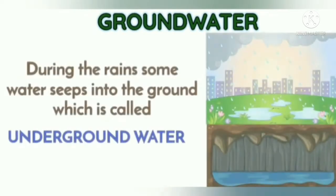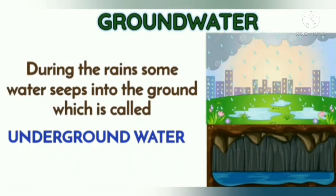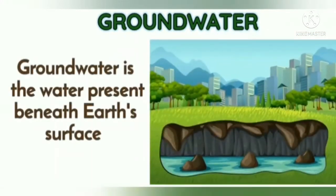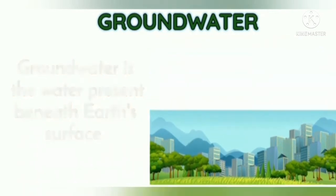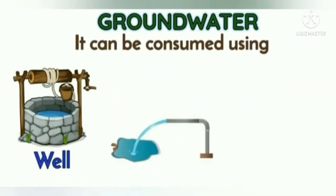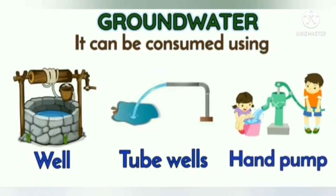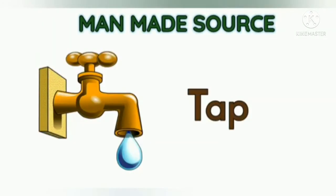During rain, some water seeps into the ground, which is called underground water or groundwater. Groundwater can be accessed using wells, tube wells, and hand pumps. Tap water is a man-made source of water, though the water itself comes from natural sources.